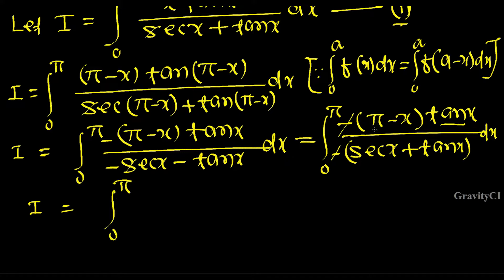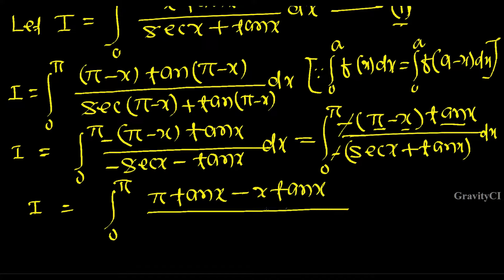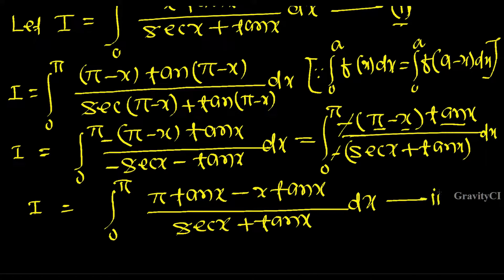Expanding the numerator: (π - x)·tan x = π·tan x - x·tan x. So I equals integral from 0 to π of (π·tan x - x·tan x) / (sec x + tan x) dx. Suppose this is equation two.